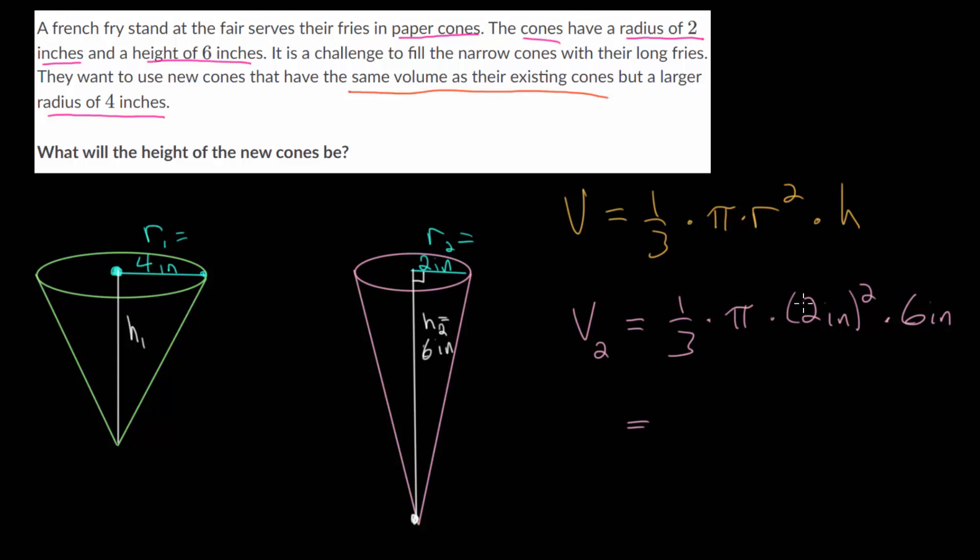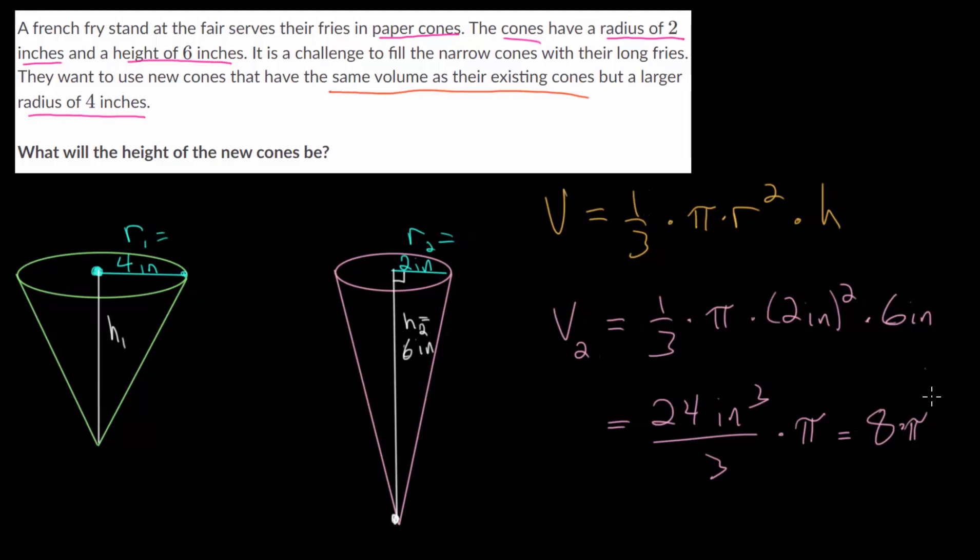If we simplify everything, this is 4 square inches times 6, so that would be 24. We have square inches times inches, which will be cubic inches. We'll divide that by 3 and multiply by π, and 24 divided by 3 is just 8. So we have 8π cubic inches.